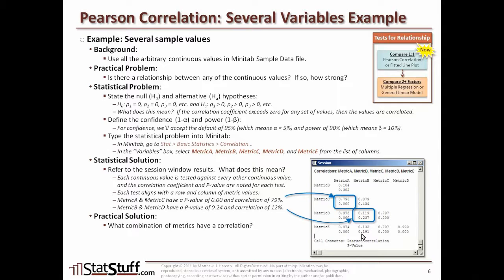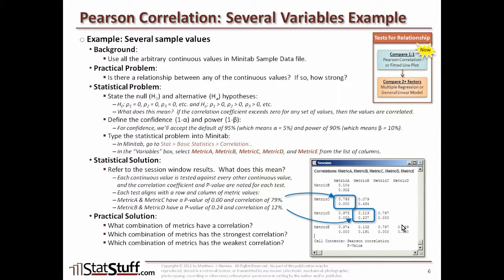Among those with a low p-value — where we can confirm a correlation exists — we then look at the correlation coefficient to find the strongest. Some are very high: 97.4% and 99.9%, nearly a perfect correlation. For the weakest, we only consider pairs that actually have a low p-value. In this example, 79.7% and 79.3% are the lowest among those with confirmed correlation, making them the weakest relationships in the comparison.